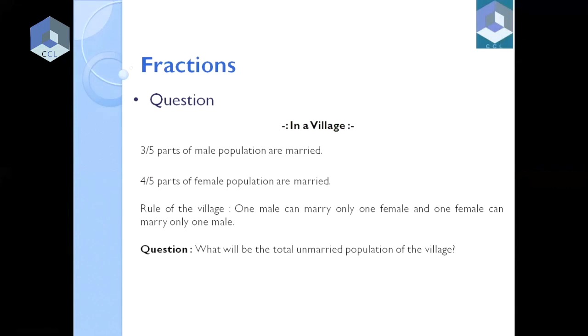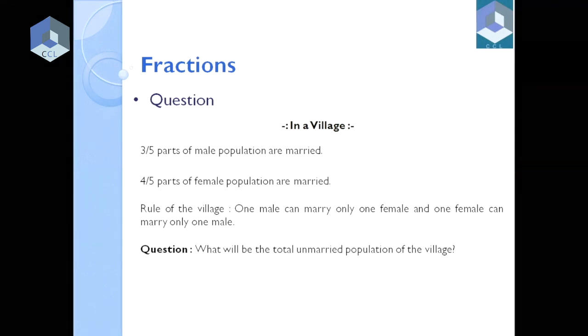3 by 5 part of the male population and 4 by 5 part of the female population are married. And the condition is the same: one male can marry one female, and similarly for the female, one female can marry a single male.